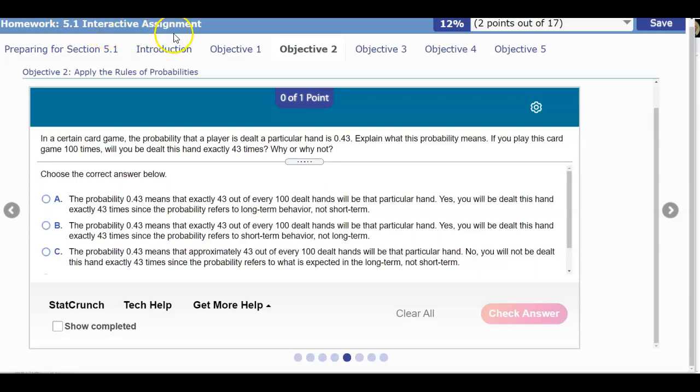Section 5.1 interactive assignment objective 2. In a certain card game, the probability that a player is dealt a particular hand is 0.43. Explain what this probability means. If you play this card game 100 times, will you be dealt this hand exactly 43 times and why or why not?